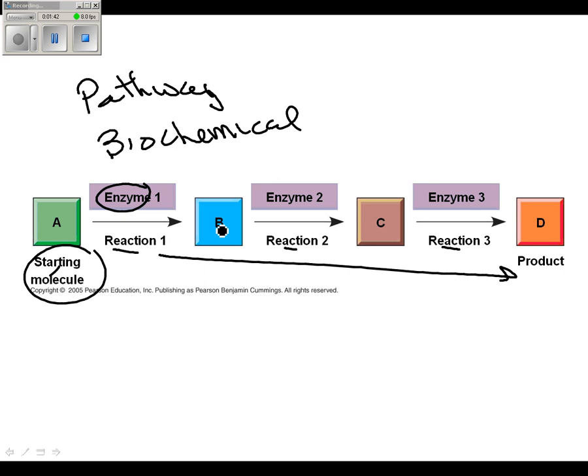So different kinds of matter transformed through the pathway. This is where we want it to end up. That's called a biochemical or metabolic pathway.